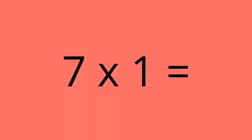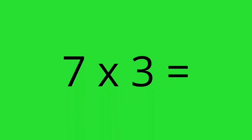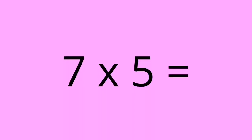7 times 1 equals 7. 7 times 2 equals 14. 7 times 3 equals 21. 7 times 4 equals 28. 7 times 5 equals 35.